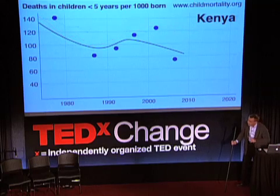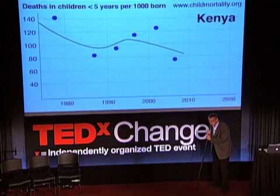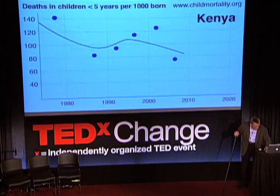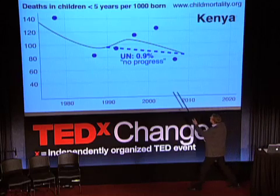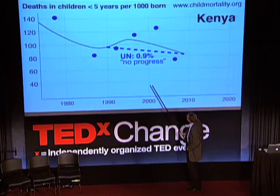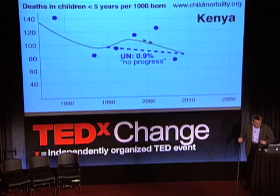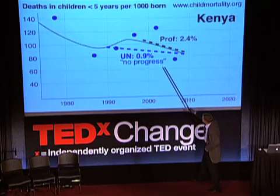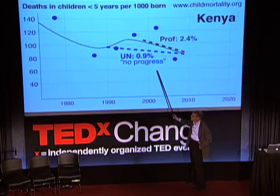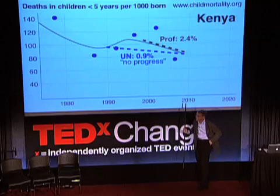But now, when you have this trend line, how do we measure progress? The UN does it like this: they start in 1990, measure to 2009, and say 0.9% — no progress. That's unfair. As a professor, I think I have the right to propose something differently. I would say at least do this: ten years is enough to follow the trend. It's two surveys and you can see what's happening now. That gives 2.4%.